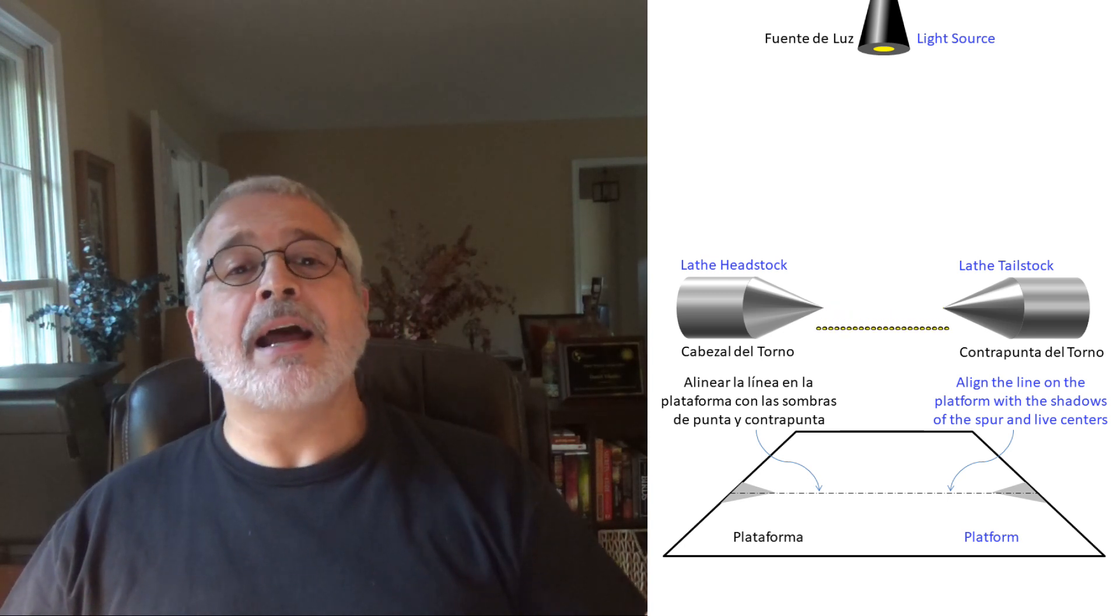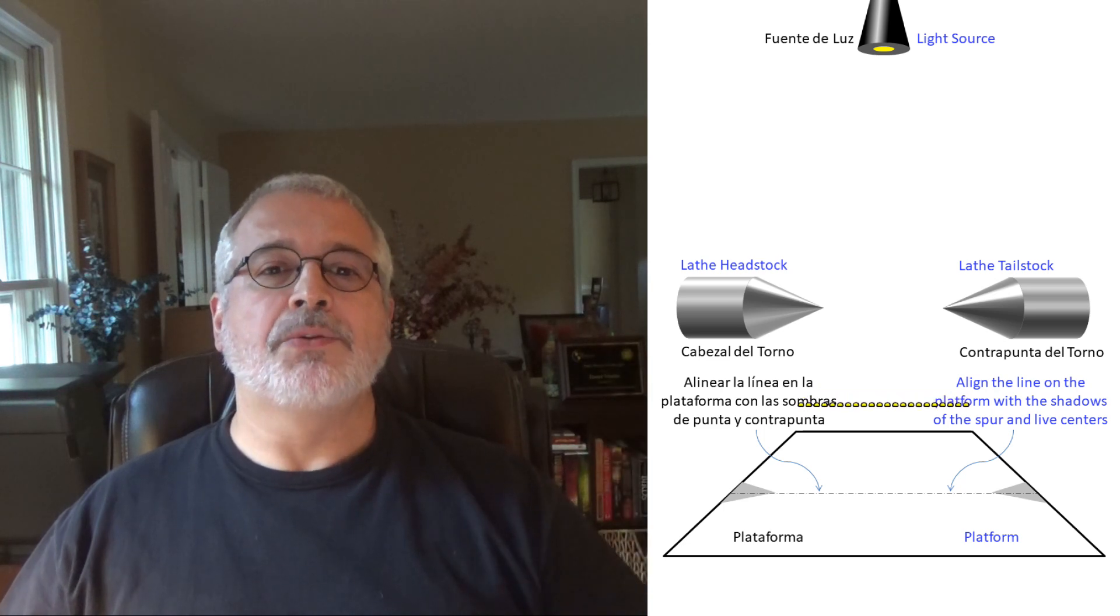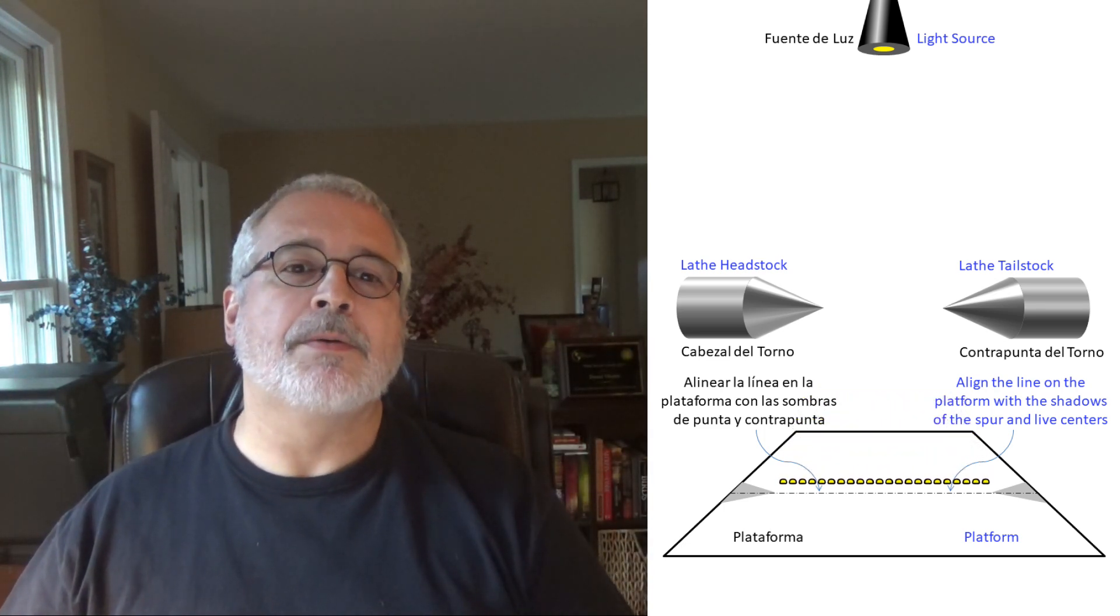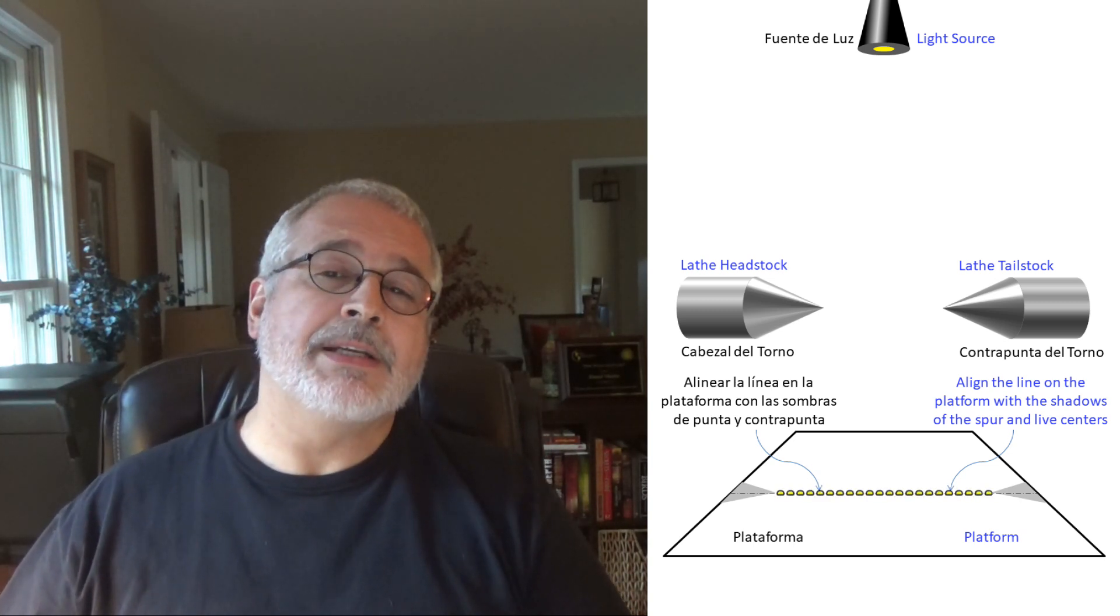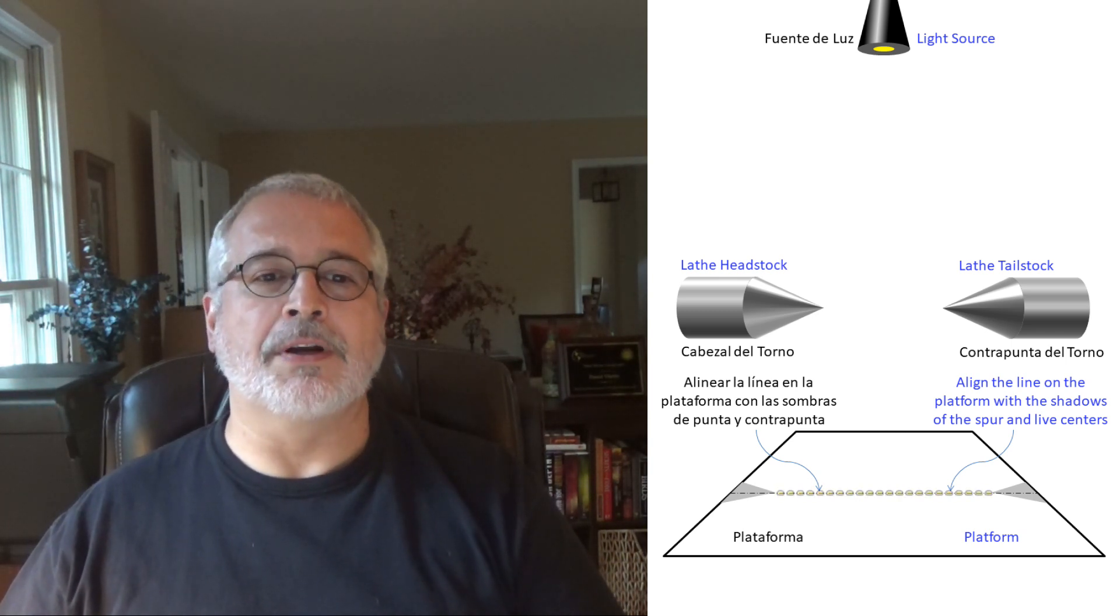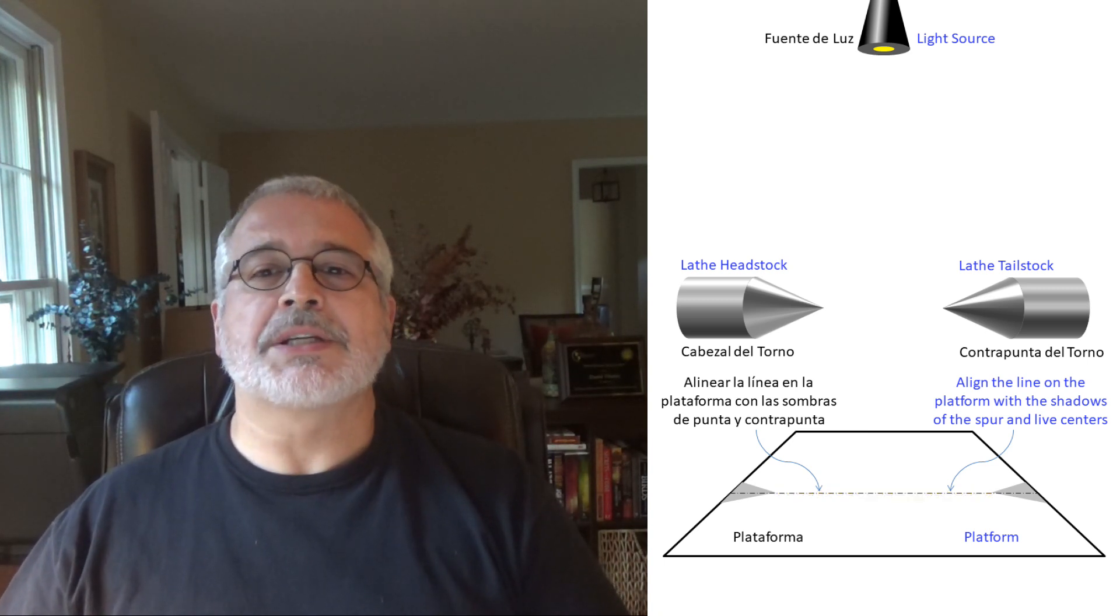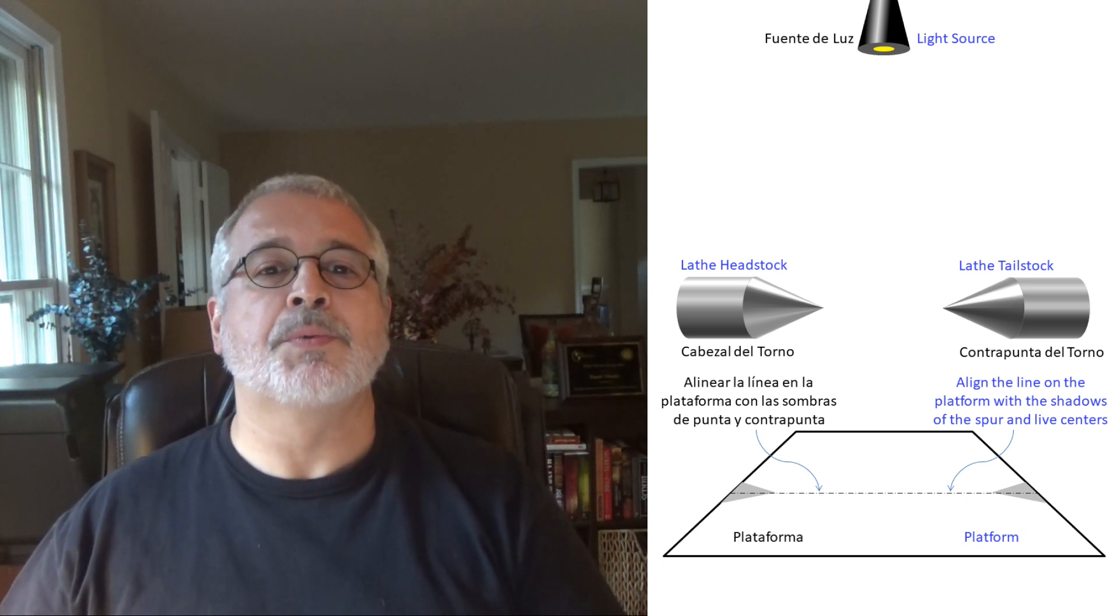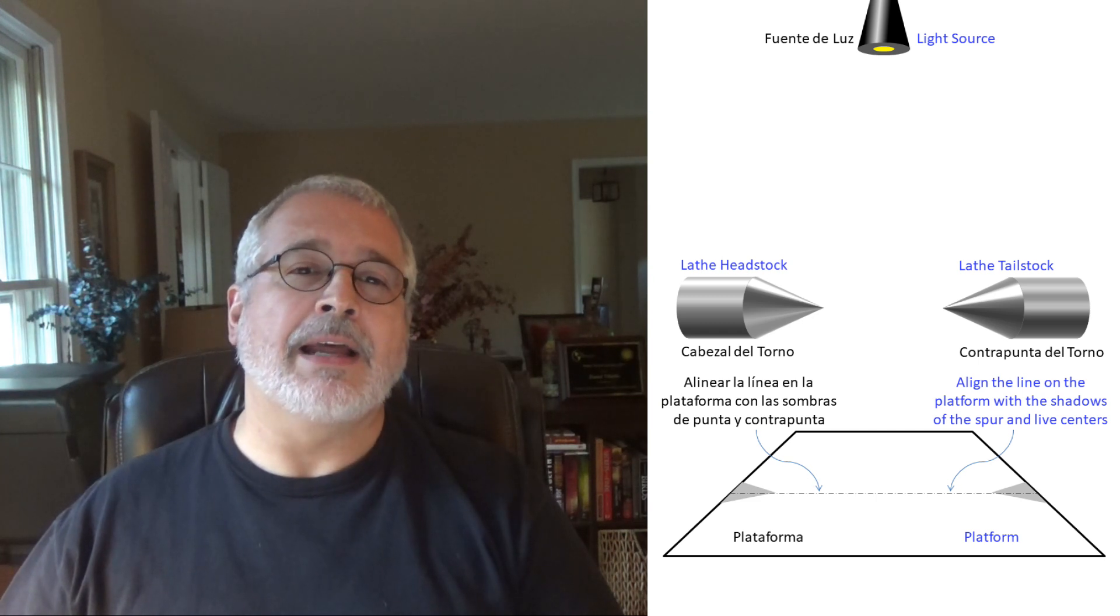Tracing a line from the spur center point shadow to the live center point shadow we will have on the platform the projection of the wood turning axis that we will use as a reference after centering there the silhouettes of the objects to turn. If the line was already drawn we just have to position the platform in such a way that the points of the spur center and the live center shadows fall on that line.